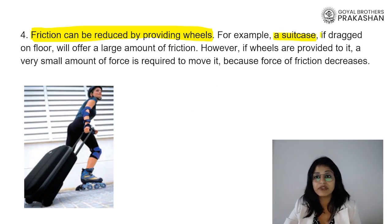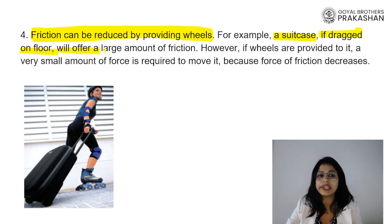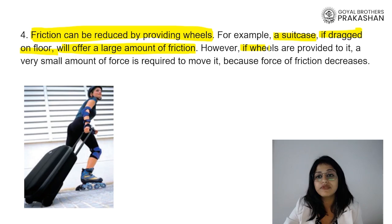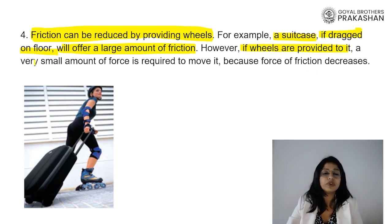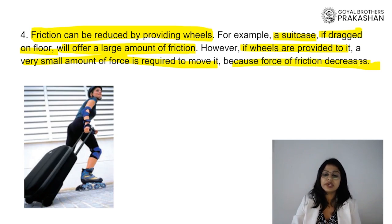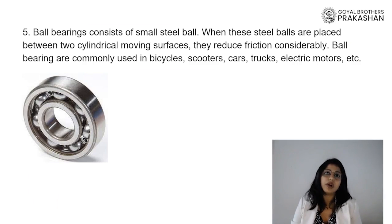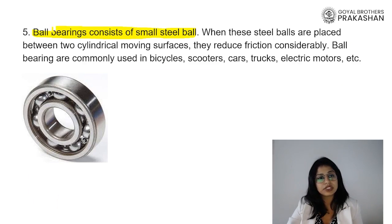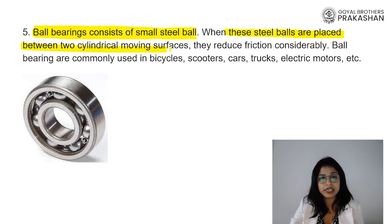For example, a suitcase — if you drag a suitcase on the floor, it is very difficult because it offers large friction. But if you apply wheels to the suitcase and push or pull it, only a very small amount of force is required. It becomes easier because you have decreased the force of friction. Ball bearings consist of small steel balls used in certain machinery to reduce effort. When these steel balls are placed between two cylindrical moving surfaces, they reduce friction considerably.